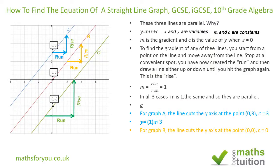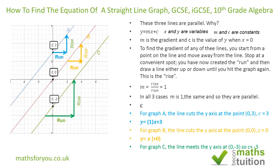For graph B, m = 1 and the graph crosses the y-axis at 0, so the equation is y = x + 0. Because the constant is zero you don't need to include it, so the equation is simply y = x. For graph C, m = 1 but this graph crosses the y-axis at minus 3, so the equation of graph C is y = x − 3.